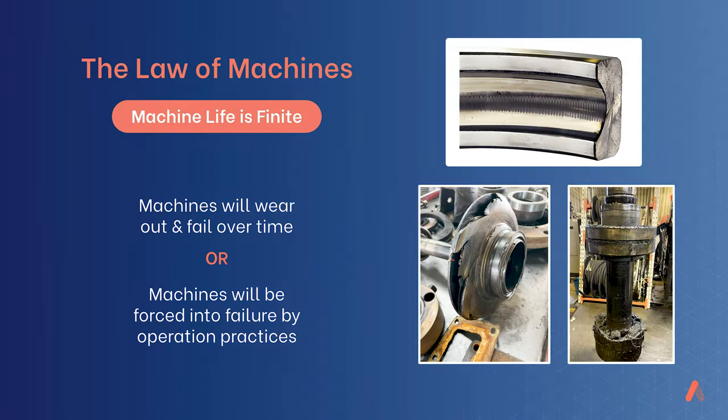The first thing to really accept is the law of machines: every machine that gets installed will wear out or be forced into failure. The trick is that we need to detect that degradation in machine performance at the right time so that we can make a plan for repair, an intervention plan or a mitigation plan to effectively make that machine run longer. All of the tools now available to us as part of the wireless and wired strategies of vibration monitors do that.